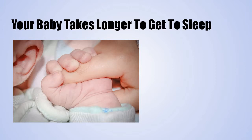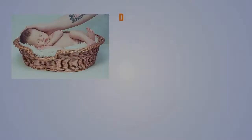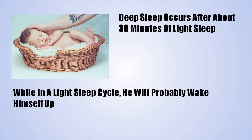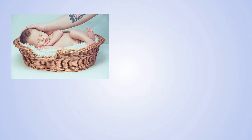Your baby takes longer to get to sleep, and when they do fall asleep, they do not immediately enter deep sleep like they used to. Deep sleep occurs after about 30 minutes of light sleep, and during those 30 minutes, or during any period of light sleep, sounds that previously didn't bother her now wake her up. If your child startles while in a light sleep cycle, he will probably wake himself up and may not know how to get back to sleep.